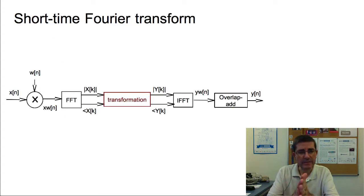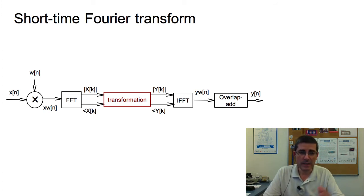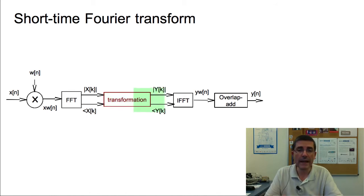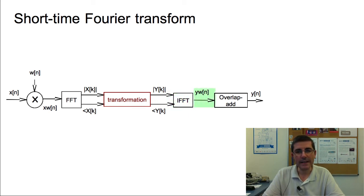Let's start with the short-time Fourier transform. This is the block diagram we saw, in which frame by frame we select a fragment of a sound, window it, compute the spectrum, and obtain a magnitude and phase. Now what we are introducing is a transformation block after this spectral analysis. From this transformation we obtain a new magnitude and phase spectrum that can be inverted to obtain a new sound that is a modified version of the input sound.